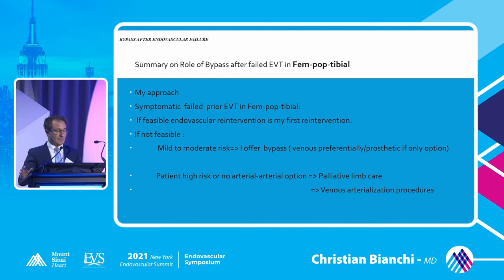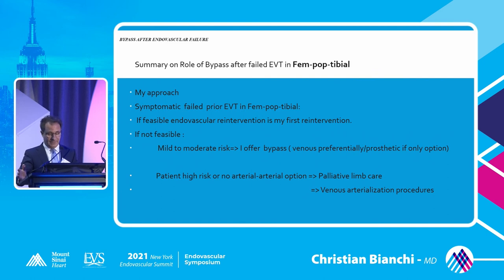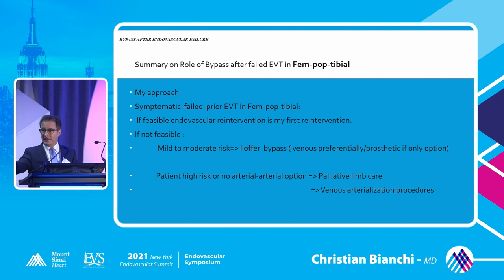My approach to femoropopliteal disease: you must have a symptomatic failed EVT. If feasible, redo endoluminal intervention is my first choice. If not feasible, we offer bypass — though some patients won't be bypass candidates due to lack of venous conduit, necessitating prosthetic conduit, which is a poor option. If patients are very high risk or lack an arterial-to-arterial option, they go into palliative limb care or a venous arterialization procedure, which I think is the next frontier.